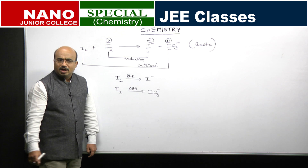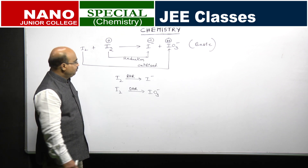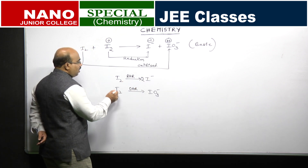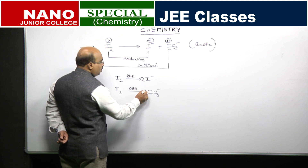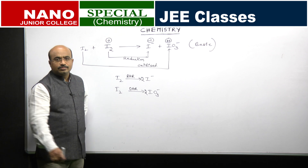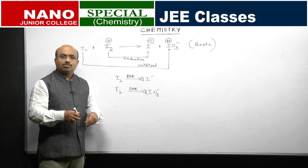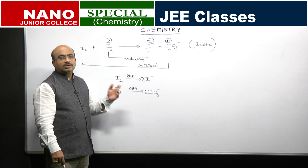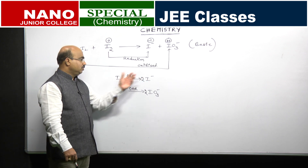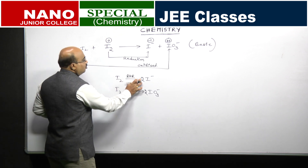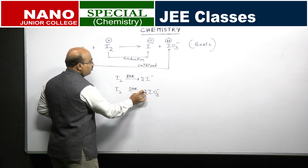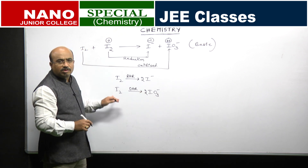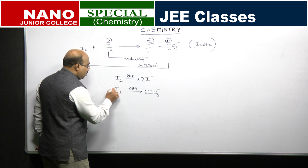First, balance the atoms other than hydrogen and oxygen. There are 2 iodines here and 1 iodine here, so write 2 on the product side. Similarly for the oxidation half: 2 iodines here, 1 iodine here, so write 2 there. Next, balance the oxygen atoms by adding water. There is no oxygen in the reduction half reaction, so no need to do anything. For the oxidation half, there are 6 oxygens in 2 IO₃⁻, so we add 6 H₂O.